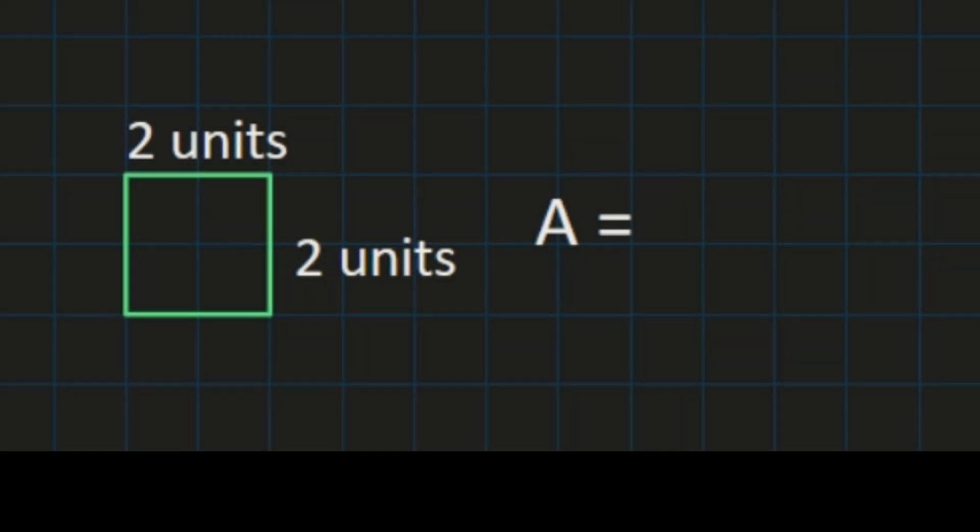One thing to remember with area is that it's measured in square units. So if you have a shape with grid lines underneath, you could just count how many square units are inside this shape. As you can with this square, you can go ahead and do that to find area.